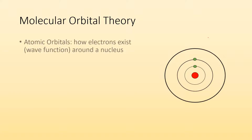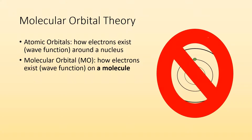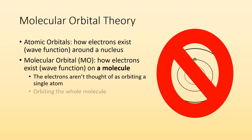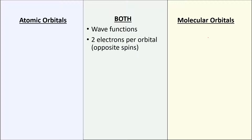So let's talk about molecular orbital theory. We've talked about atomic orbitals, which describe how electrons exist around a nucleus — what their wave function is. Molecular orbitals are similar but different: they describe how electrons exist on a whole molecule, not just a single atom. A quick comparison — both theories talk about wave functions for electrons, both have two electrons per orbital with opposite spins, and electrons in orbitals have definite amounts of energy. The key difference: atomic orbitals are for one atom; molecular orbitals are for the whole molecule.